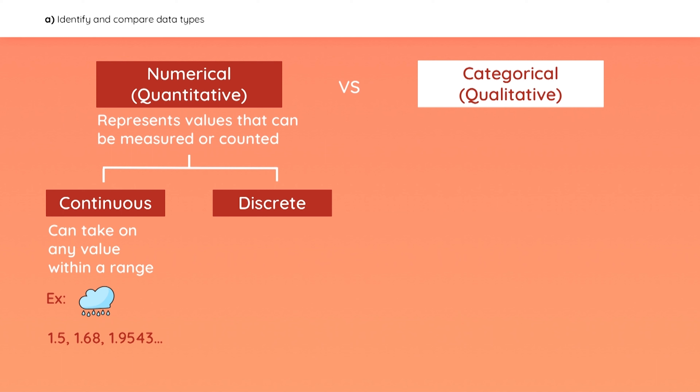Discrete data, on the other hand, results from a counting process. For example, the number of eggs that a chicken lays per day, or a stock's price.